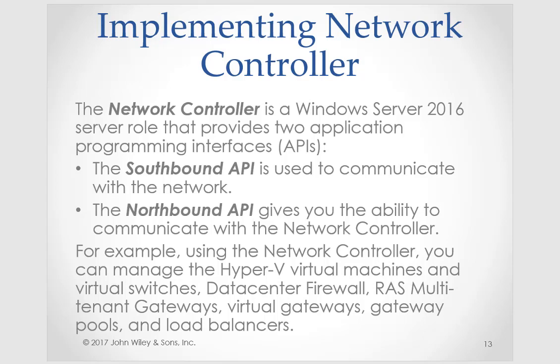The network controller contains two application programming interfaces — APIs. The southbound API communicates with the network; the northbound API gives you the ability to communicate with the network controller. For example, you can use these to manage your Hyper-V virtual machines and switches, data center firewall, and multi-tenant gateways.